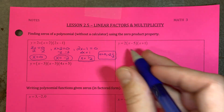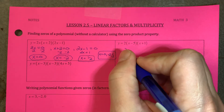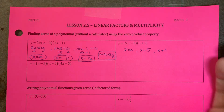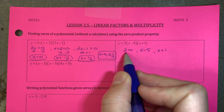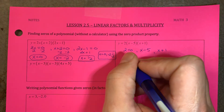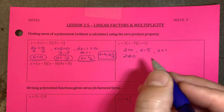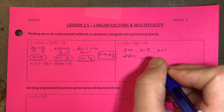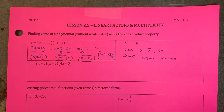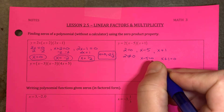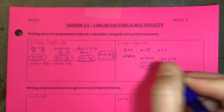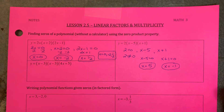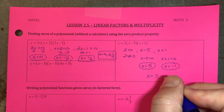For the next one, set each expression equal to 0: 2 equals 0, x minus 5 equals 0, and x plus 1 equals 0. The constant 2 doesn't have a variable, and 2 is not equal to 0 — that's no solution, so you eliminate it. For x minus 5 equals 0, add 5 to both sides: x equals 5. For x plus 1 equals 0, subtract 1: x equals negative 1. Those are your zeros: 5 and negative 1.